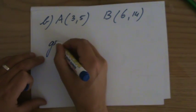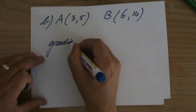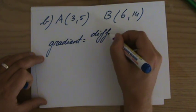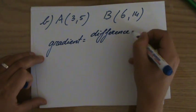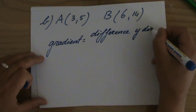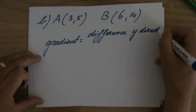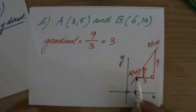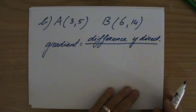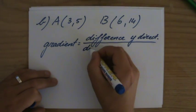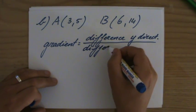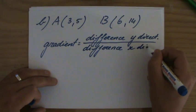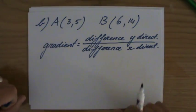Yeah? So you could say that the gradient of a line is the difference, the amount of steps, the difference in the y direction. Yeah? Direction, I'll just put it like that, divided by the amount of steps to the right. So that's the difference in the x direction. Difference in the x direction. Okay.